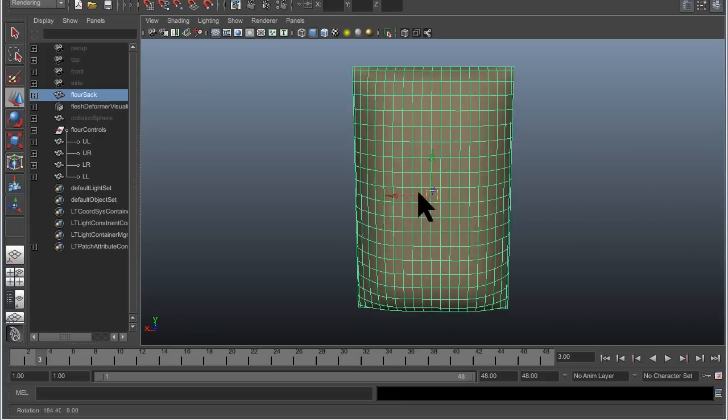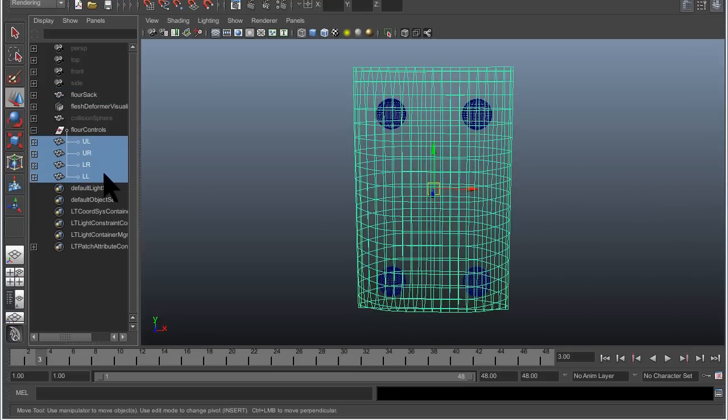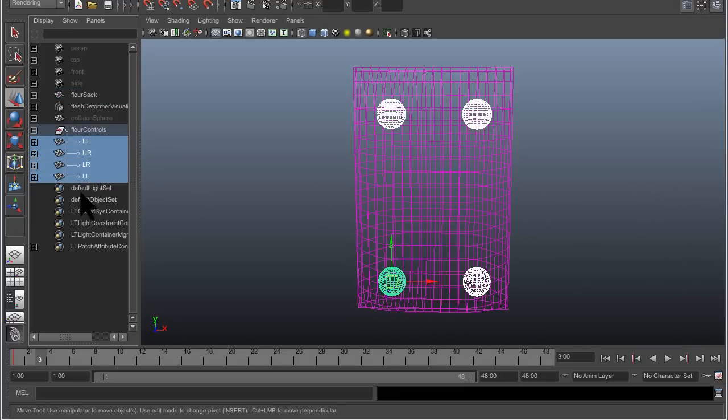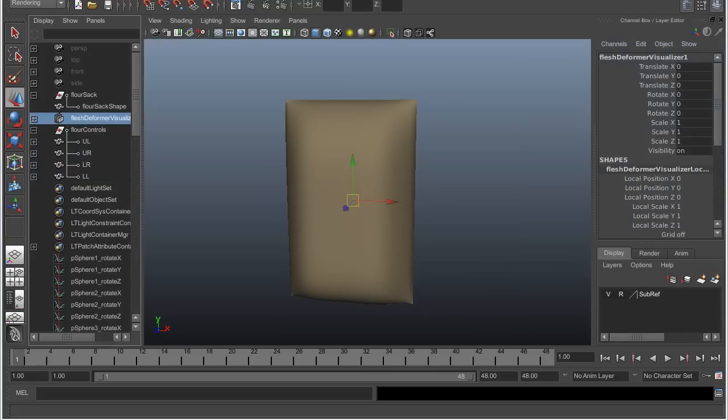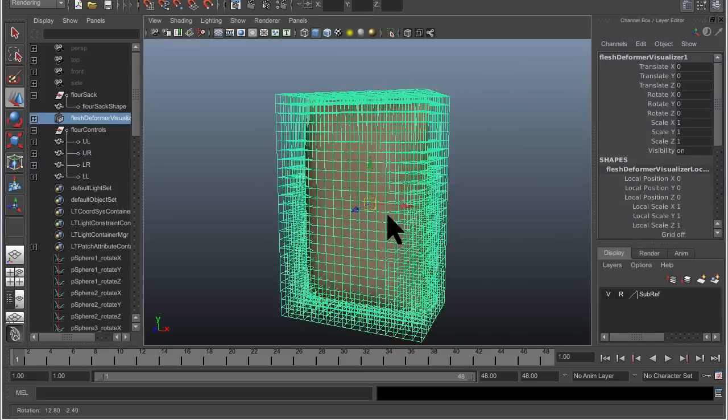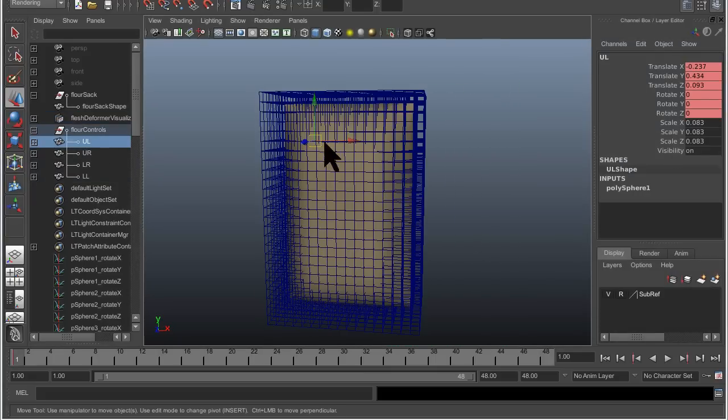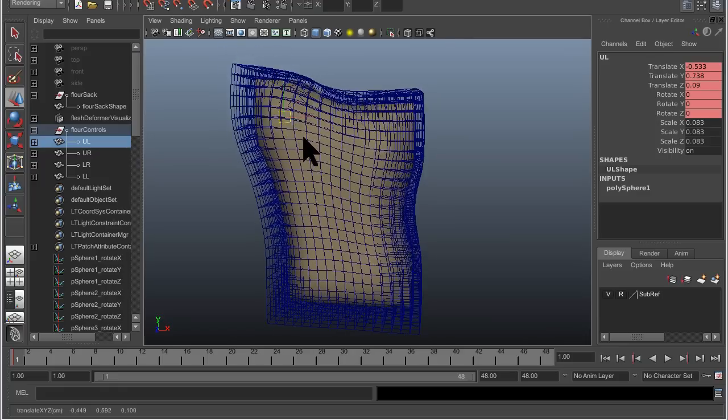We motivate our method with a simple flower sack geometry. We control the simulation with four spheres at the corners instead of a skeleton. Our method deforms an underlying hexahedral lattice. If we select one of the controls and move it, it causes a deformation in this lattice.